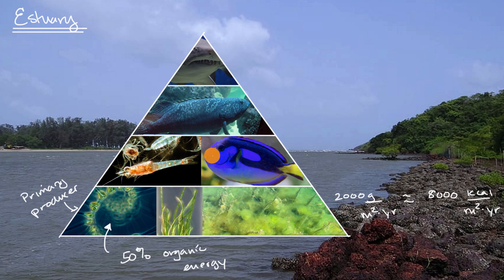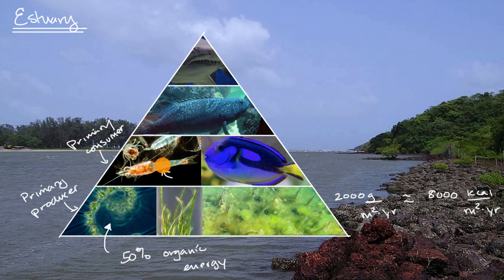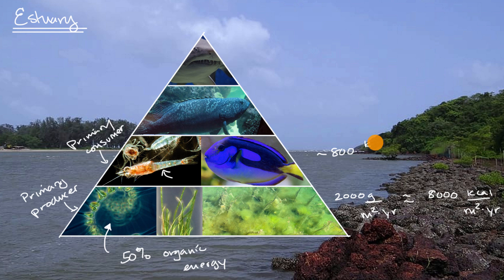At the next layer, we have primary consumers. Not all of that energy can be used by this next layer. Examples include zooplankton — which you could view as animal plankton, a large category of things that go with the flow of the currents — and a fish like this royal blue tang that might be eating plankton. The net energy available to the layer above is typically about 10%, so instead of 8,000 kilocalories, we'd be talking about approximately 800 kilocalories per square meter per year available for the next layer.